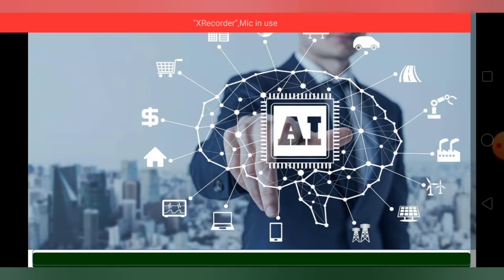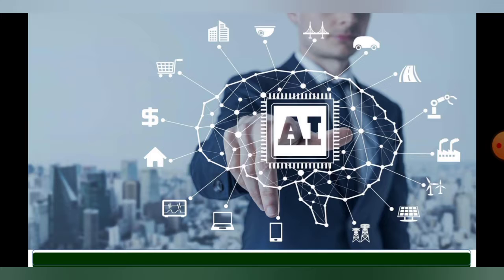Now coming to the next slide — where is AI? As you can see, a big AI chip is shown in the fingertip of a human being with various sub-branches connected. In the picture you can see computers, mobiles, towers, panels, factories, roads, aircraft, buildings, money, and homes — everything is connected to artificial intelligence. This picture indicates the full scenario of AI in our day-to-day life, showing how important this subject is.